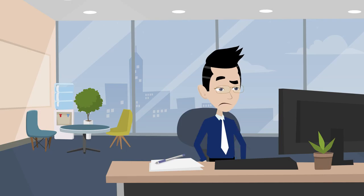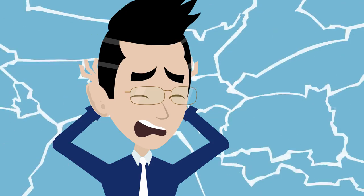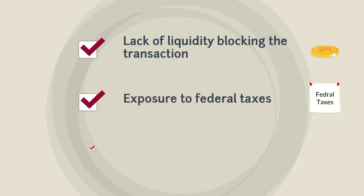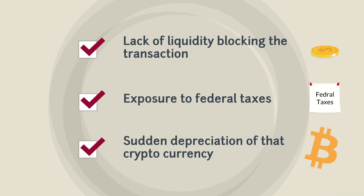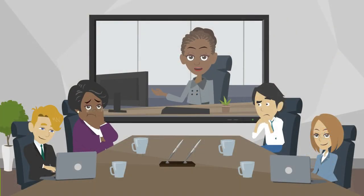But he is a bit nervous. Many colleagues told him that converting cryptocurrency to fiat can be troublesome due to lack of liquidity blocking the transaction, exposure to federal taxes, or sudden depreciation of that cryptocurrency. And on top of that, what would his investors think if they knew he was dumping it?